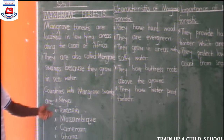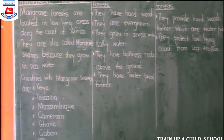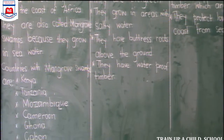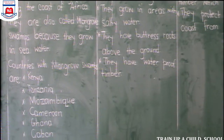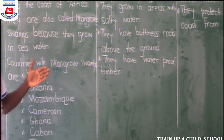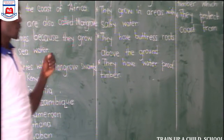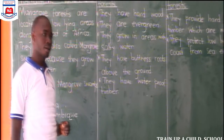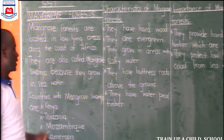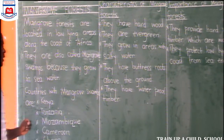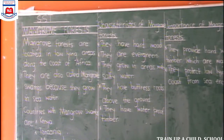These two countries have mangrove forests because they lie along the coast and at the same time, the coastal parts of East Africa have what we call salty water. Mangrove swamps cannot do well in an area which doesn't have salty water.